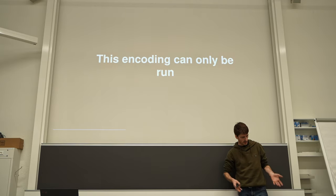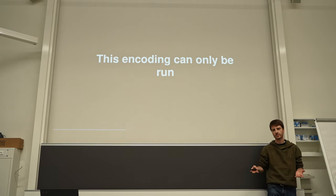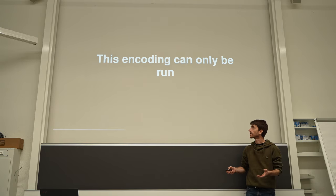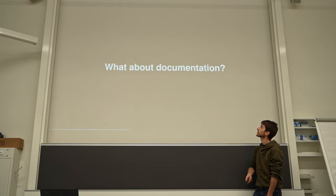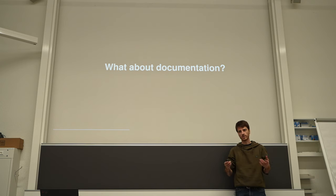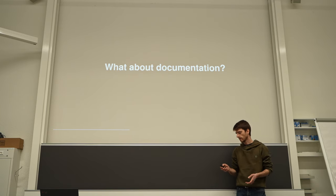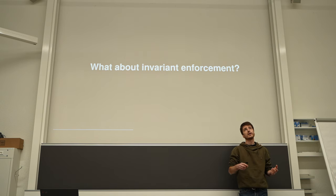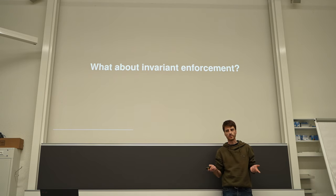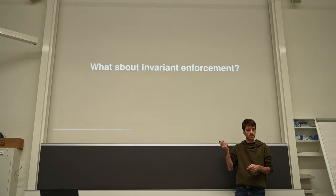The main issue with encoding a state machine as just a function is that the only thing you can do with a function is apply an argument to it — run it. But maybe there's something else you want to do with a state machine. For example, you want to extract some documentation out of it. Machines can be represented graphically, and maybe you want to generate a graphical representation from code. Or you want to impose some invariants — say, from state A I can only go to state B and not state C — which is not possible with this kind of implementation.